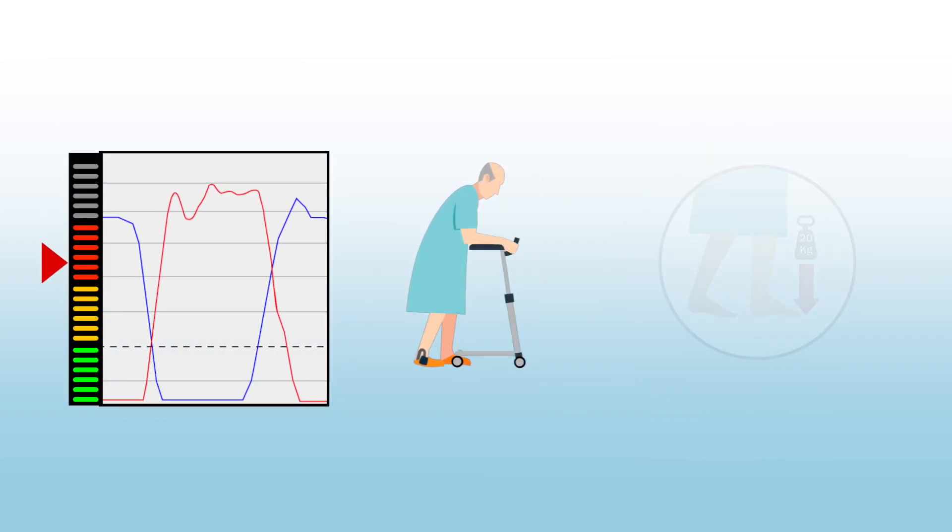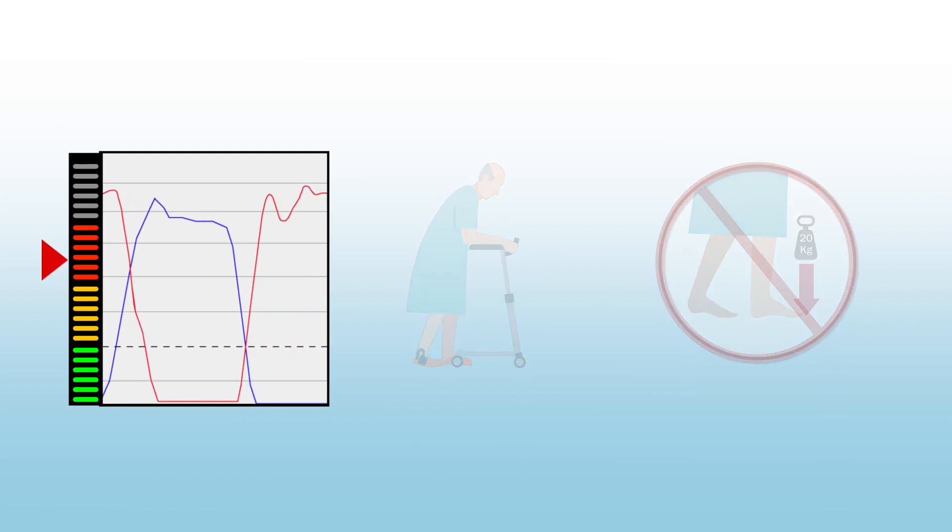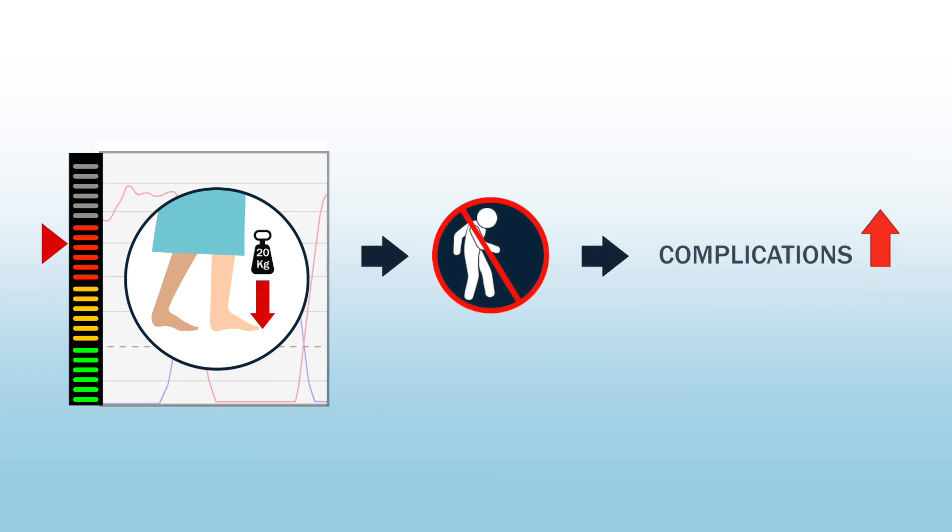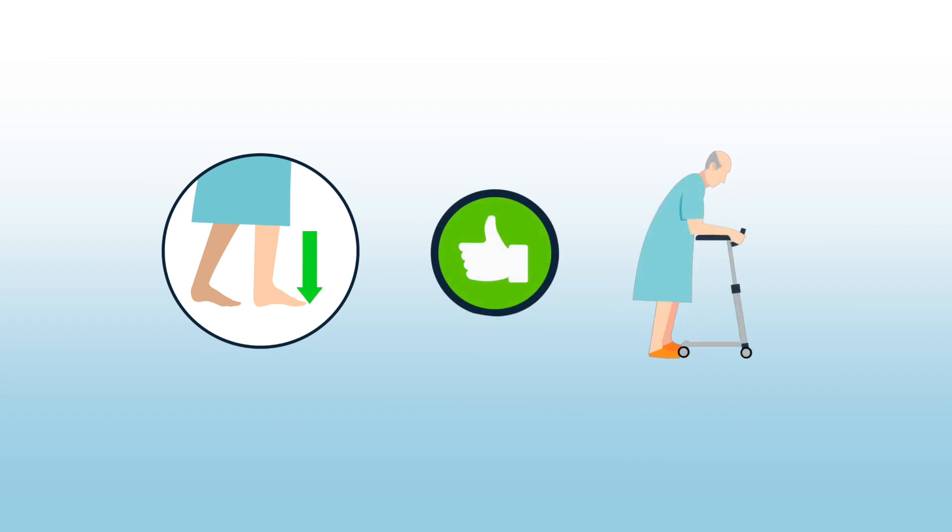Elderly hip fracture patients were unable to adhere to post-operative partial weight-bearing restrictions. Considering that weight-bearing restrictions lead to immobility, which triggers complications, an unrestricted allowance of post-operative weight-bearing is recommended for elderly hip fracture patients.